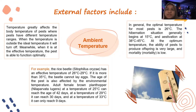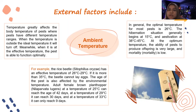External factors include ambient temperature. Temperature greatly affects the body temperature of pests, where pests have different temperature ranges. When the temperature is outside the ideal range, it will cause death. Meanwhile, when at effective temperature, the pest is able to function optimally. In general, the optimal temperature for most pests is 26 degrees Celsius.